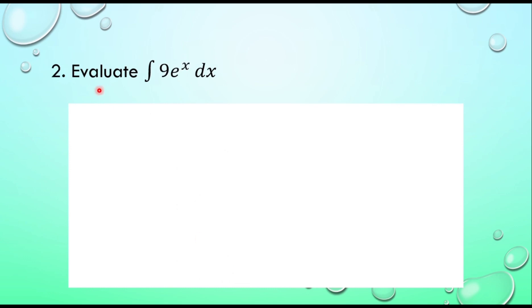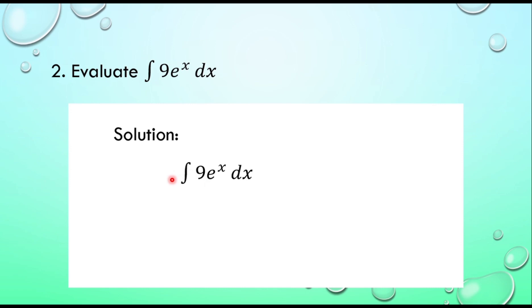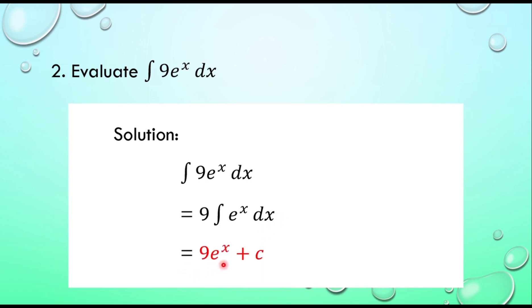Number two: evaluate the integral of 9e raised to the power x dx. We write the given equation: the integral of 9e raised to the power x dx. Then we move the constant outside the integral, giving 9 times the integral of e raised to the power x dx. Cancelling the integral and dx, and adding the constant of integration, the result is 9e raised to the power x plus C.